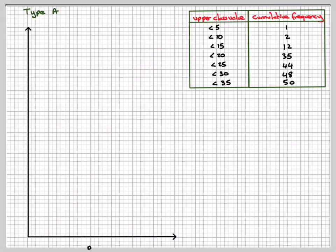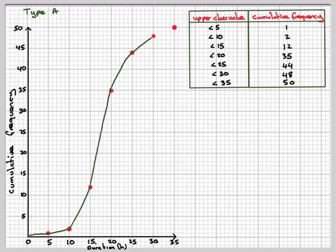And then we can repeat it for type B. Exactly the same thing. Duration along the horizontal axis, cumulative frequency on the vertical axis. Remember to label your axes. Plot in the same things: 5 against 1, 10 against 2, 15 against 12, 20 against 35, 25 against 44, 30 against 48, and 35 against 50. Join them up in a smooth curve.